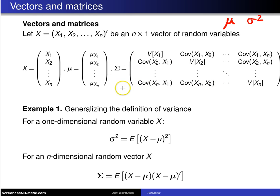Here is an example. How is it that you generalize the definition of variance? Well, for a one-dimensional random variable x, you know that the variance is the expected value of x minus mu squared. That's simply the defining formula for the population variance in one dimension.